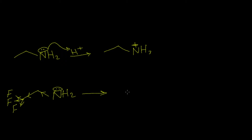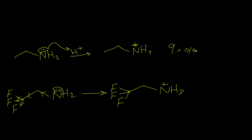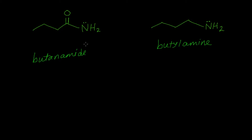So the yield of the protonated product of this compound will decrease. For example, if the yield of the unsubstituted compound is ninety percent, this yield is going to be nearly twenty to thirty percent. This is just an approximation, not the true value. This illustrates the resonance effect on basicity.